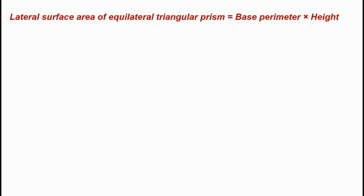Lateral surface area equals base perimeter into height. The base perimeter is 12 and height is 5 cm, so that is equal to 12 into 5, and that is equal to 60 cm².